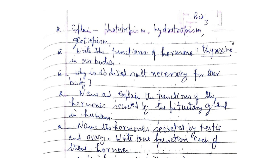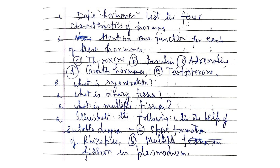Write one function each of these hormones. Define hormone. State four characteristics of hormones. Mention one function for each of these hormones: thyroxine, insulin, adrenalin, growth hormone, and testosterone. What is regeneration? What is binary fission?